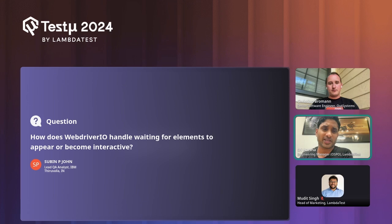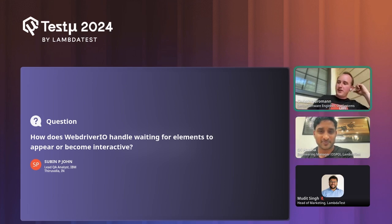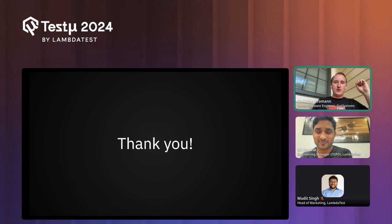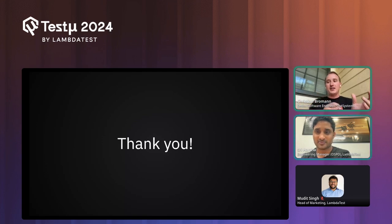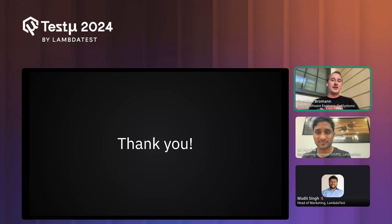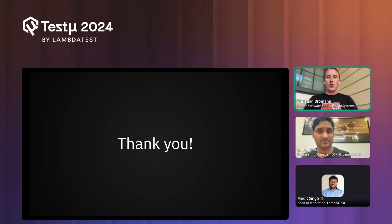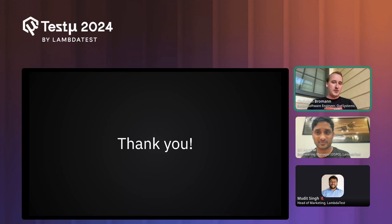Q: How does WebdriverIO handle waiting for elements to appear or become interactive? A: One feature not mentioned in the talk is automatic handling for elements to be interactable. When you fetch an element and want to click on it, WebdriverIO tries to resolve the element reference once you interact with it — it ensures the element is visible and interactable, and if not, automatically waits a bit. If it hits a timeout threshold, it tells you the element is not interactable along with the likely reason. We're also working on features to help better understand why certain elements are not interactable.